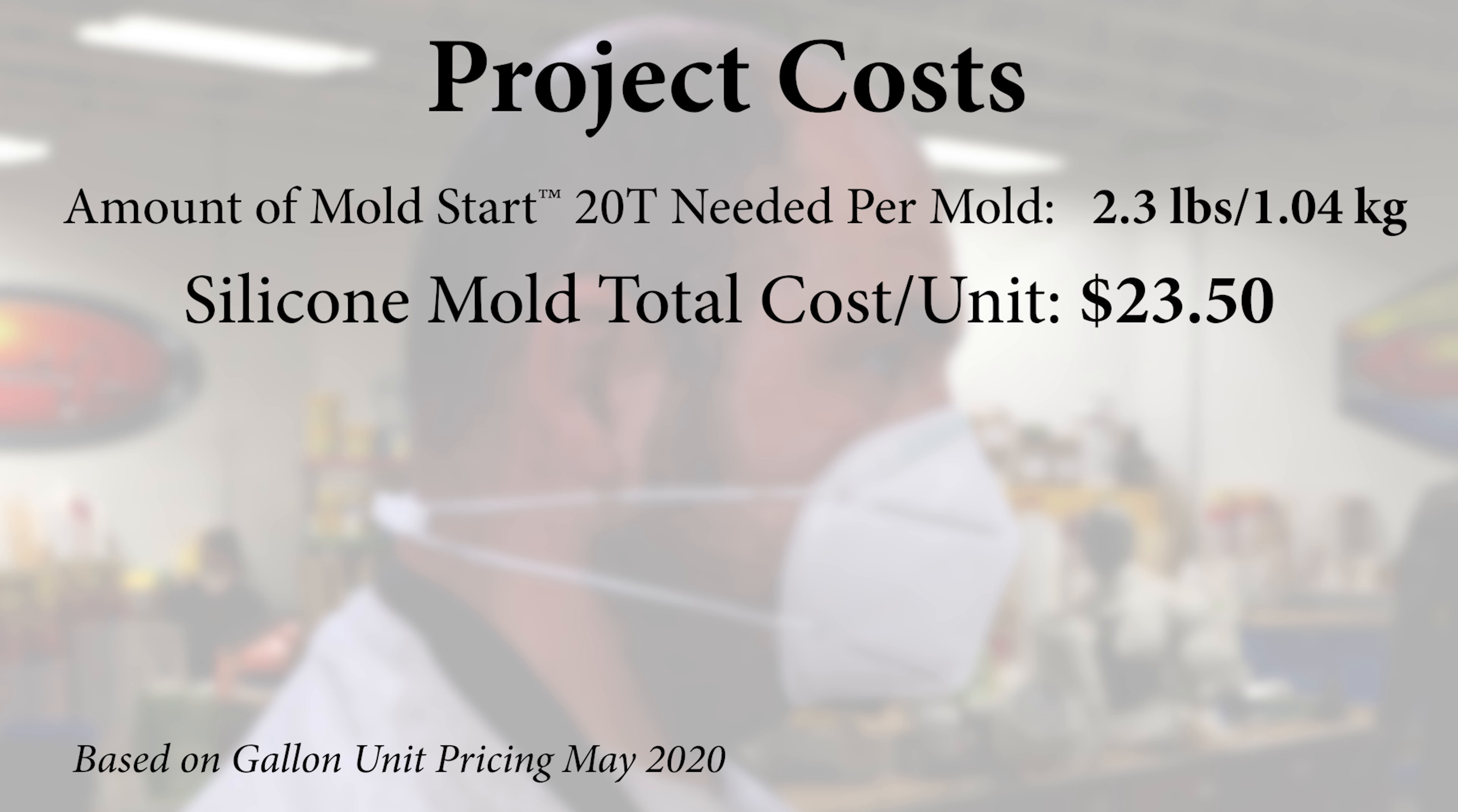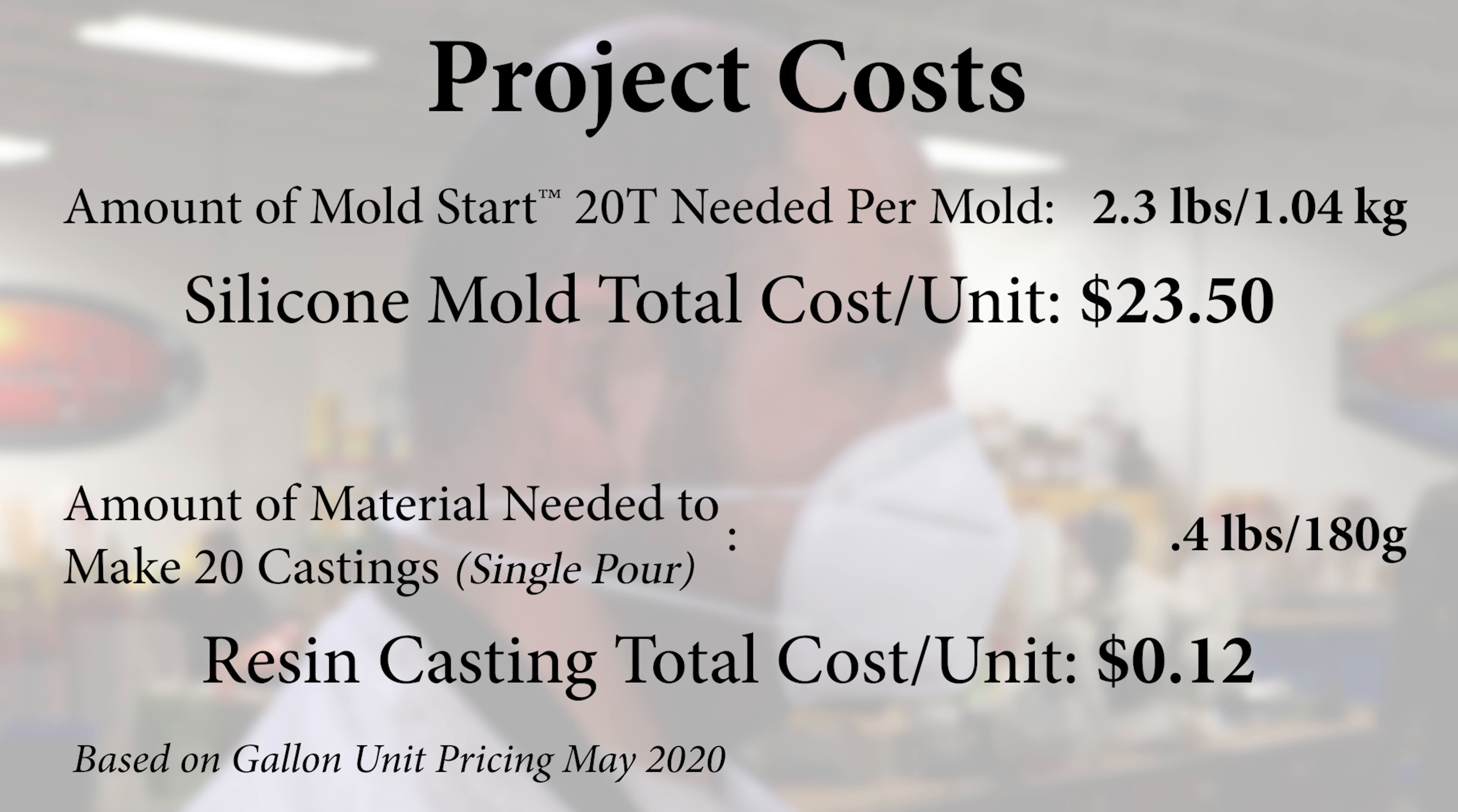The Moldstar 20T mold that we made is 2.3 pounds of material which breaks down to about $23.50 per mold. The SmoothCast 65D castings that we made for a single pour of 20 we ended up using 180 grams which is about 0.4 pounds which breaks down to about 8 grams or 12 cents per casting individually.